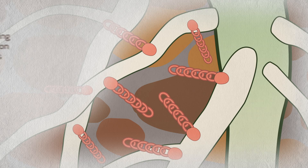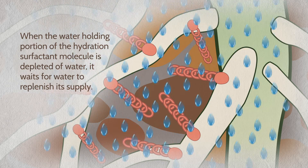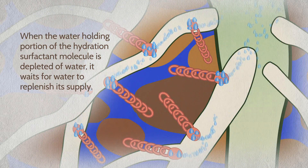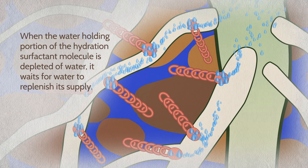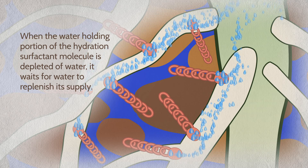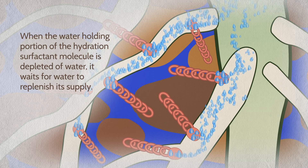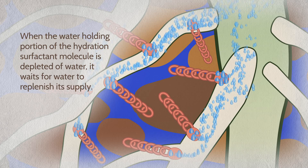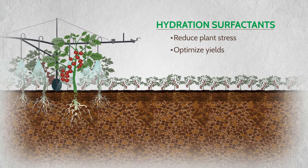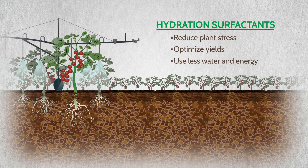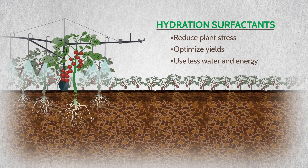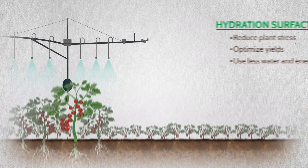When the water-holding portion of the hydration surfactant molecule is depleted of water, it waits for rain or irrigation water to replenish its supply. Crops grown on soils treated with hydration surfactants experience less stress and optimized yields, while using less water and the energy required to pump it.